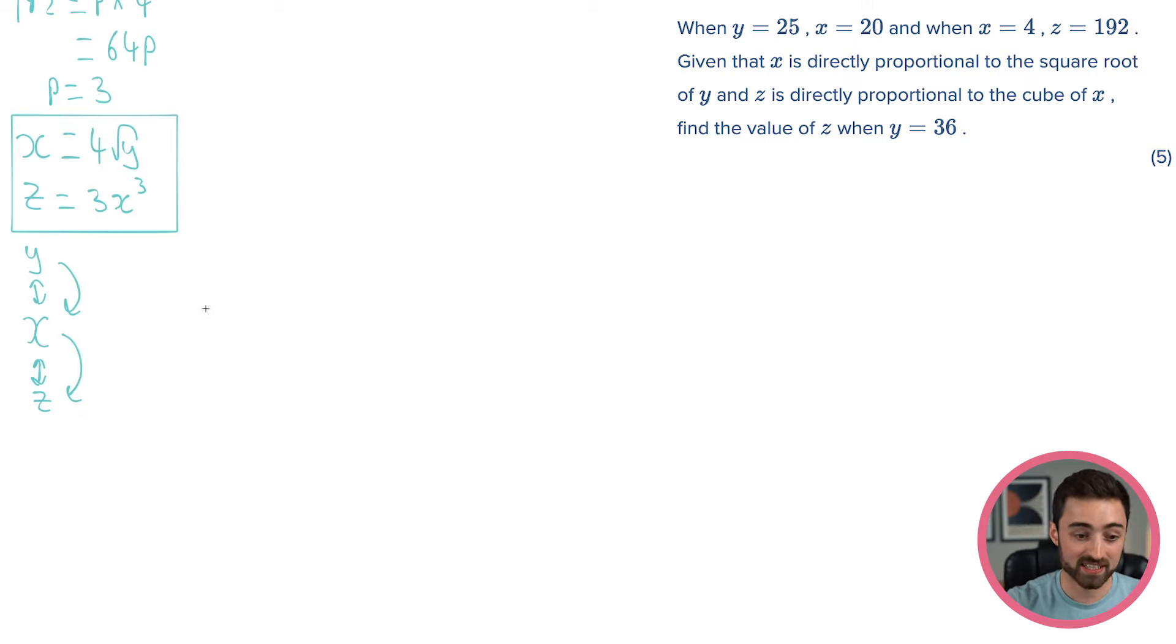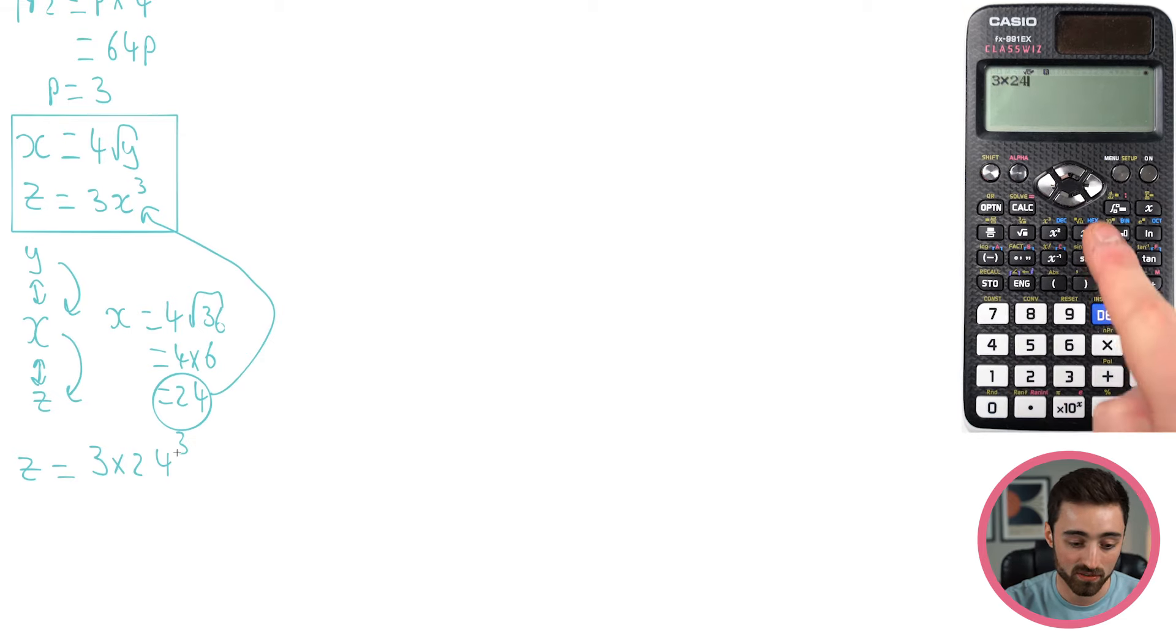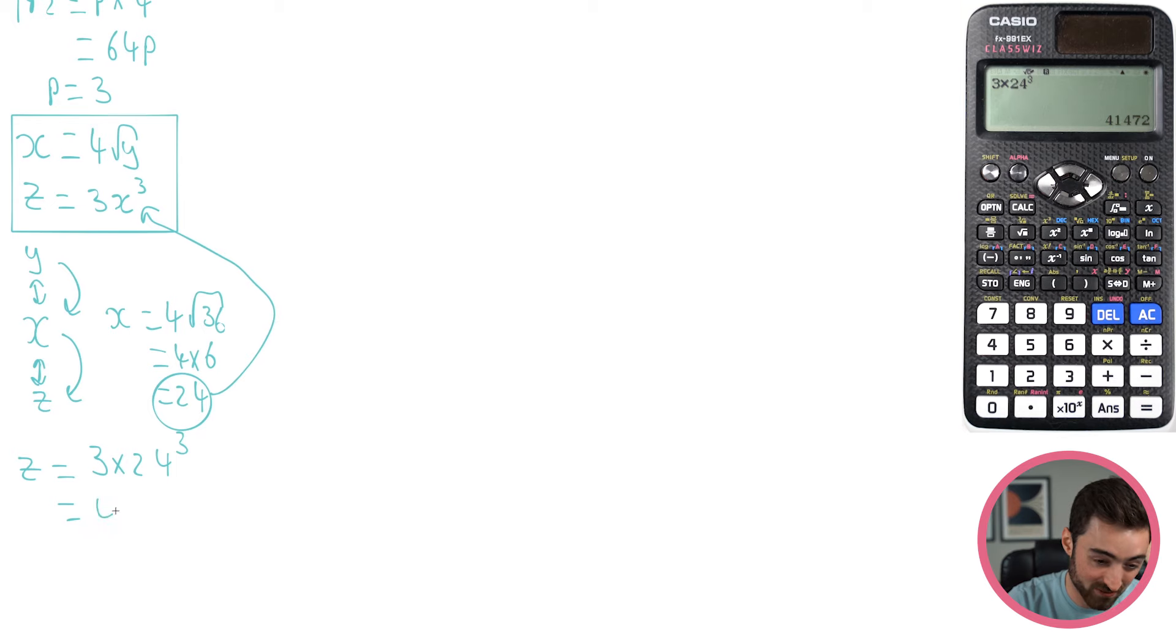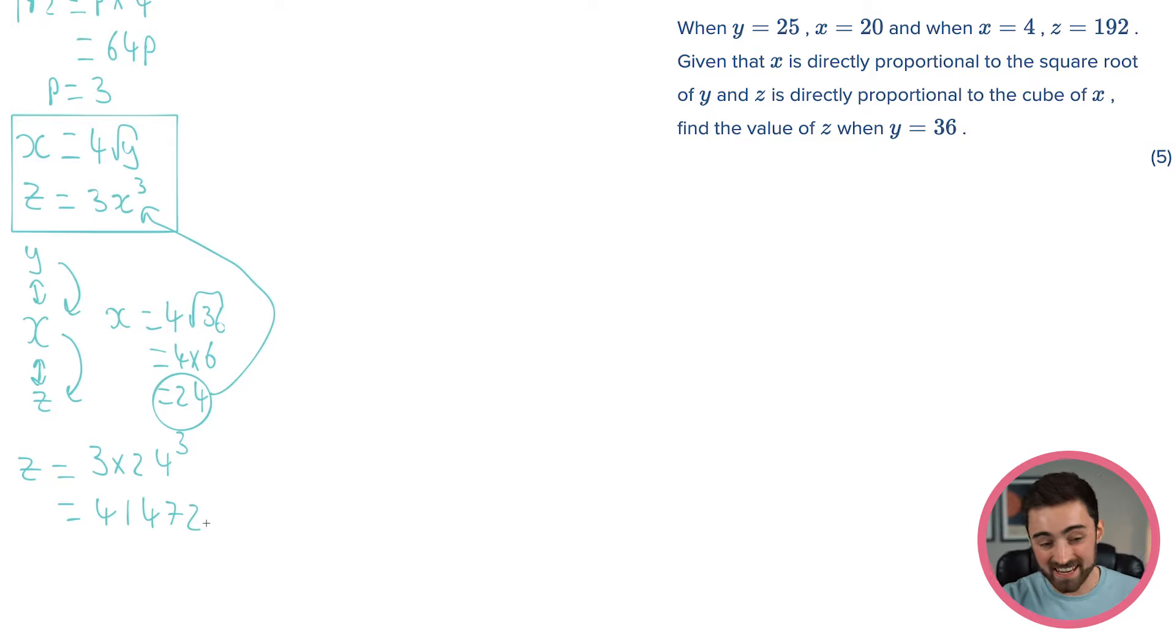So, y is 36. Just straight in, I've got x is going to equal 4 times the square root of 36. This is why it's so useful once we have these constants of proportionality. You just sub the numbers in. Square root of 36 is 6. So, I'm going to get 4 times 6. I'm going to get 24. I've got my x value now. Just do the same thing. Inject this right into here. So, z at this point is going to equal 3 times 24 cubed. And I'm definitely going to use the calculator for that one. So, 3 times 24 to the power of 3 gets me 41,472. It's not pretty, but it's right.